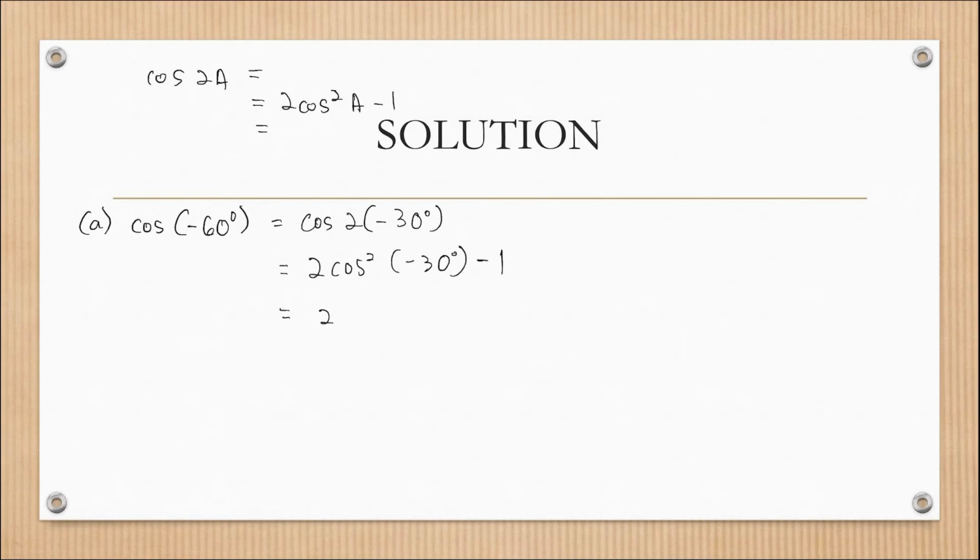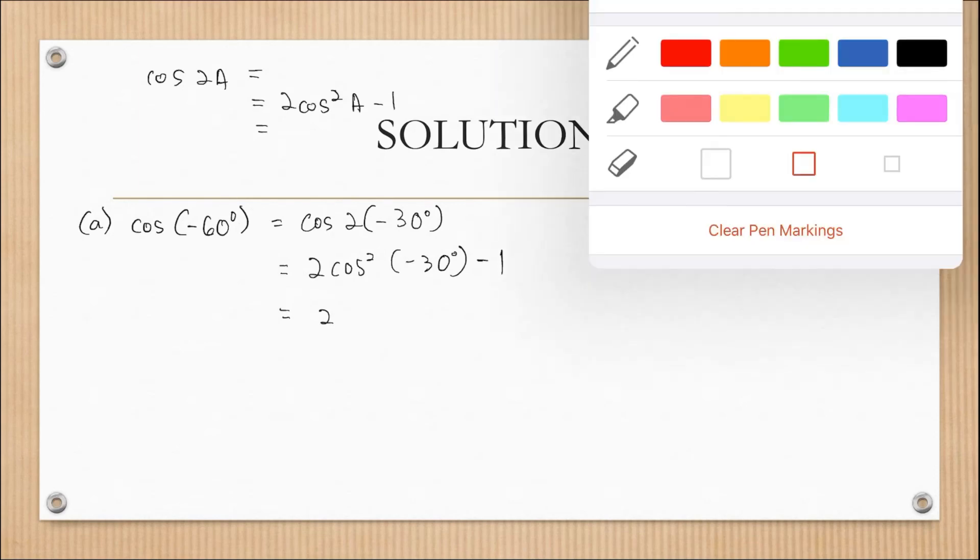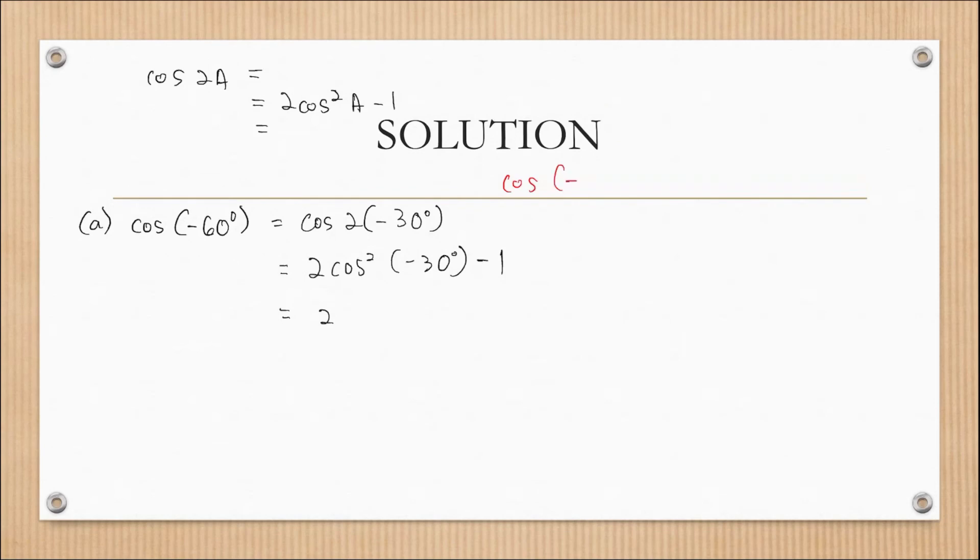Again, you can press your calculator. Cos(30°), cos(-30°) is actually the same as cos(30°). So cos(-30°) is the same as cos(30°). So use your calculator. Cos(30°) is √3/2 squared minus 1. So final answer: 1/2.